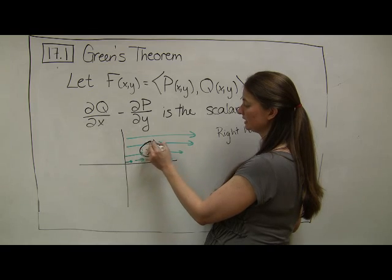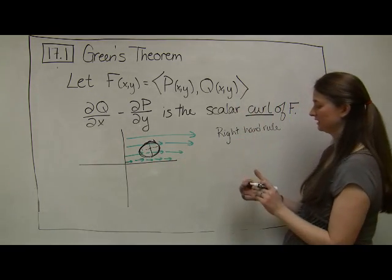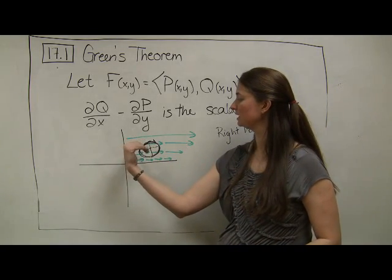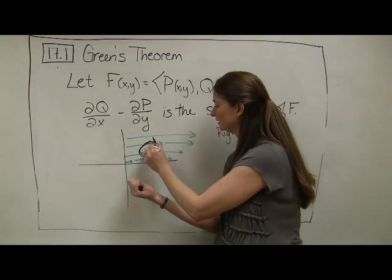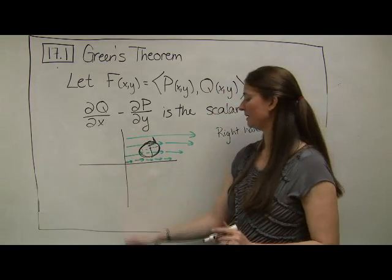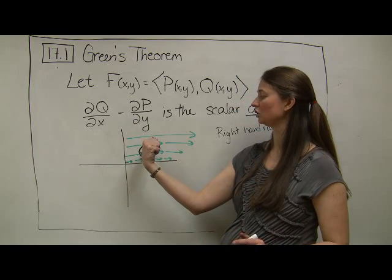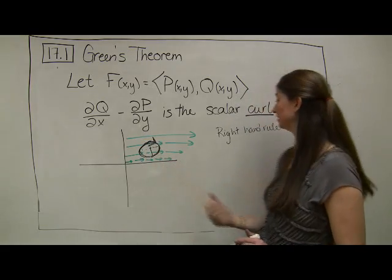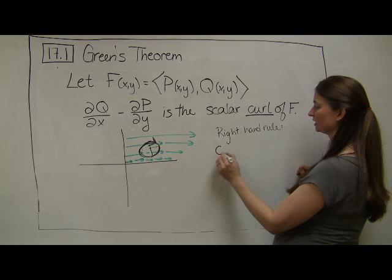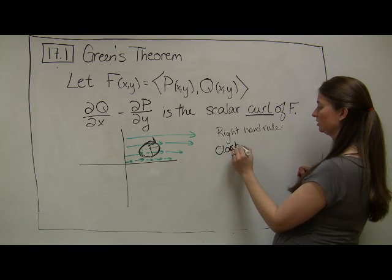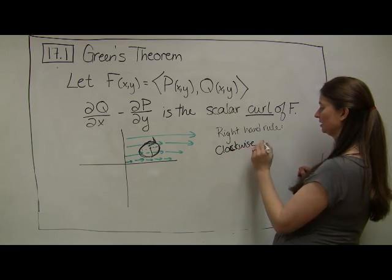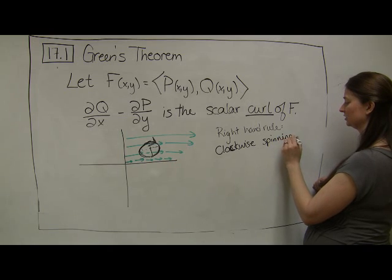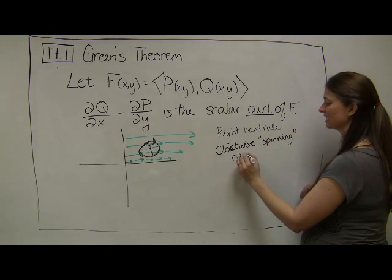And so if our pinwheel is spinning in a clockwise direction, my right-hand rule tells me that I'm going to line up my right hand so that my fingers are spinning in the same direction as my pinwheel. And I see that, in that case, my thumb is pointing in the direction of the scalar curl, and my thumb is pointing negatively, my thumb is pointing down into the board. So the right-hand rule tells us that with clockwise spinning, that's a technical term, we have negative scalar curl.